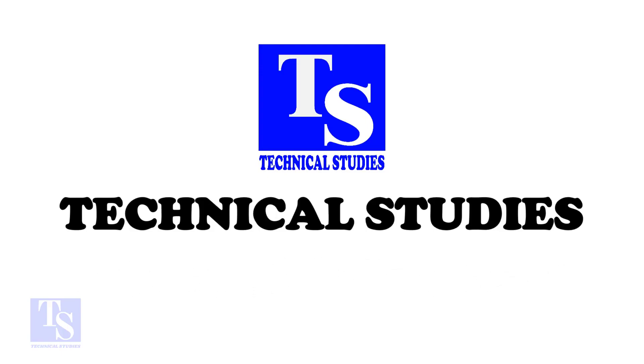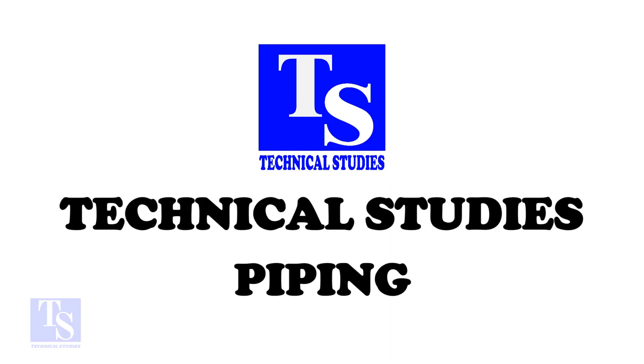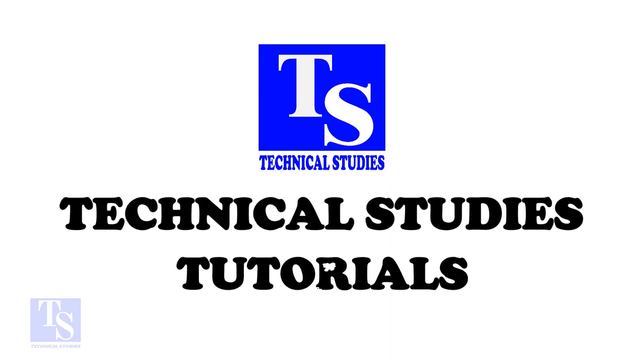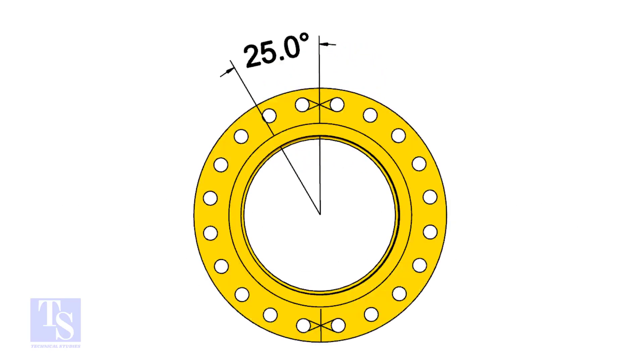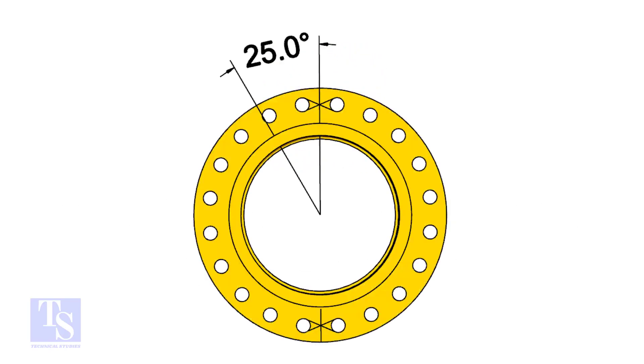I choose a slip-on flange for the example, but the calculation and the procedure are same for all flanges. The pipe and the flange size is 16 inch, and the flange will rotate 25 degrees anticlockwise.